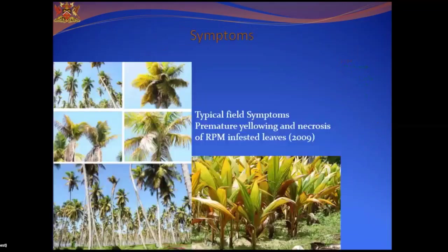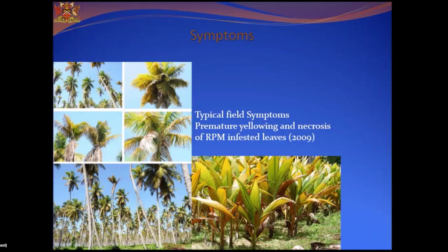Typical field symptoms include premature yellowing and necrosis of red palm mite-infested leaves. They are usually found on the undersurface of the leaves in very large numbers. They feed by inserting their stylet — a very narrow, straw-like mouthpart — into the stomata between the guard cells, and suck the sap from the plant. Coconut palms severely affected showed entirely yellow leaves, particularly on the lower third region of the plant. The yellowing of the leaflets is followed by abortion of flowers and small nuts, and the mites are readily dispersed by wind and by man.